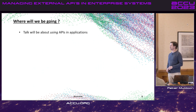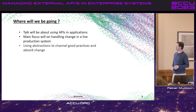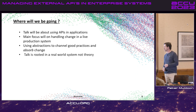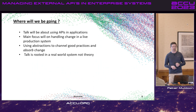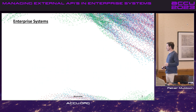This talk is about using APIs in an application as a consumer. The main focus is handling change in a live production system. We'll use abstractions to channel good practices and absorb change — protecting you in a critical production environment. This is rooted in the real world: a brand new rewrite of a major trading system at Bloomberg, moving to Linux, written from scratch. We have our own coroutine library, it's highly parallel with a lot of throughput, and it's been successful.